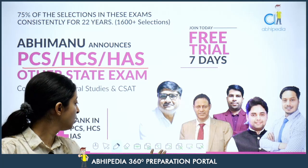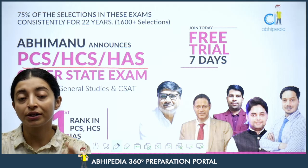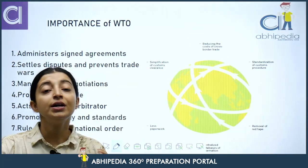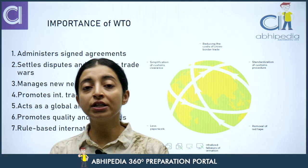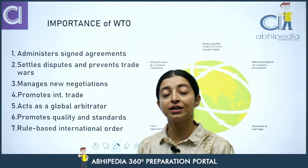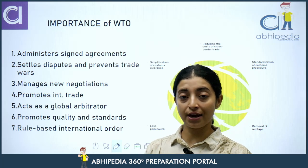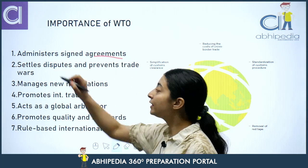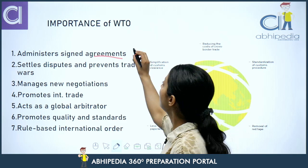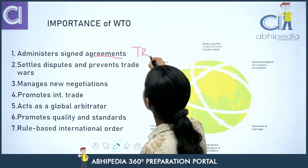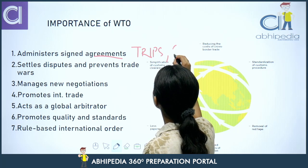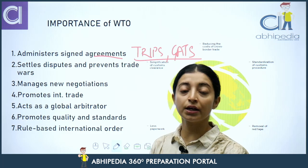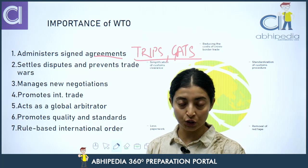Coming back to our video on international organizations, today we are going to talk about the relevance of World Trade Organization — starting with the importance of WTO: what are its functions and what is its importance in the present time. First, it administers signed agreements — for example, TRIPS, or General Agreement on Trade and Services. Administering such agreements is the work of the World Trade Organization.